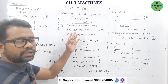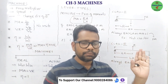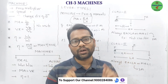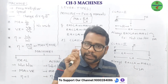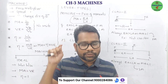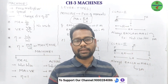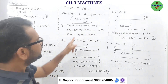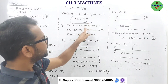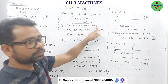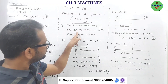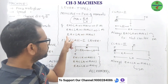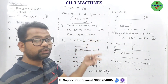The mechanical advantage of a lever is effort arm divided by load arm. The effort arm is the distance from the fulcrum to the effort, and the load arm is the distance from the fulcrum to the load. If effort arm is greater than load arm, mechanical advantage is greater than 1 — it acts like a force multiplier. If effort arm is less than load arm, mechanical advantage is less than 1 — it acts like a speed multiplier. If they are equal, mechanical advantage equals 1, and it changes the direction of effort.